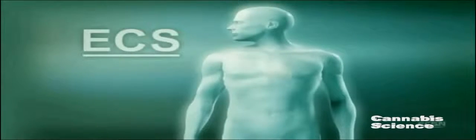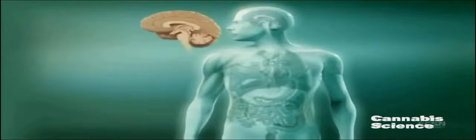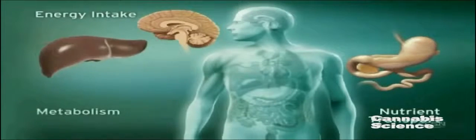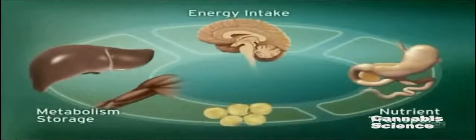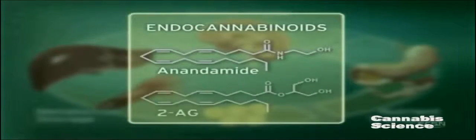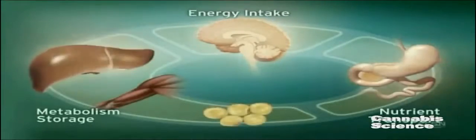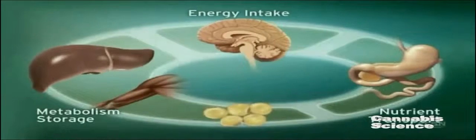The endocannabinoid system, or ECS, influences multiple physiologic processes. This intricate system modulates energy intake as well as nutrient transport, metabolism, and storage. The ECS regulates these processes through endogenous ligands such as anandamide and 2-arachidonyl glycerol and the CB1 receptor. CB1 receptors are located in the brain, digestive tract, muscle, and adipose tissue.